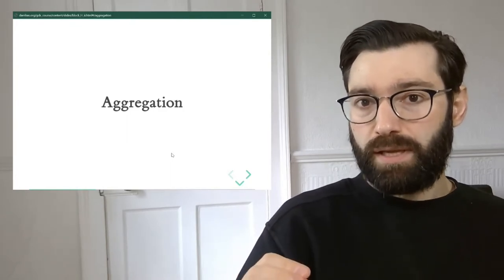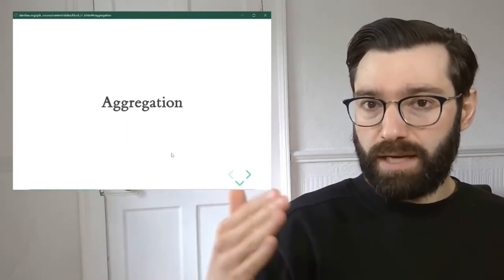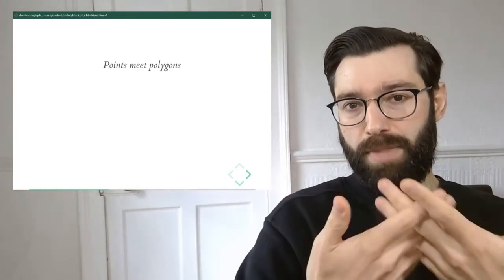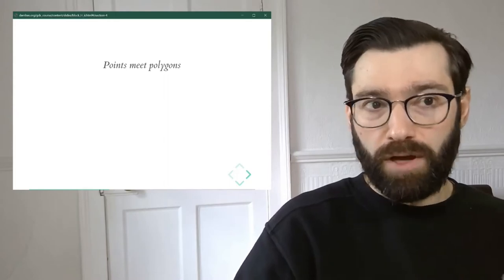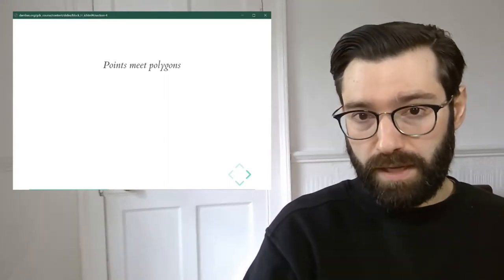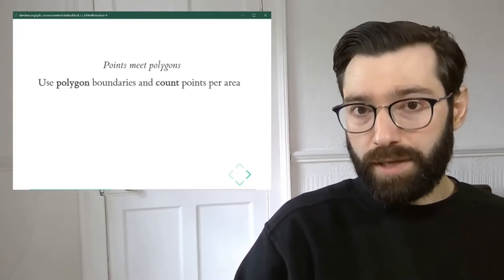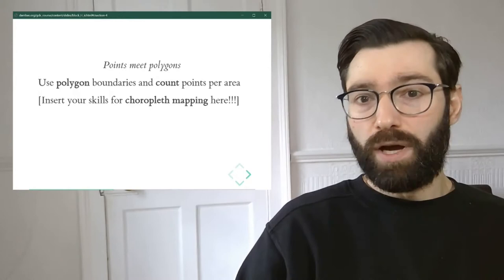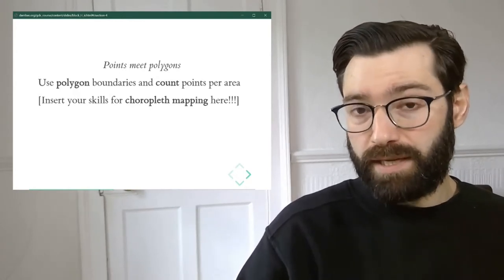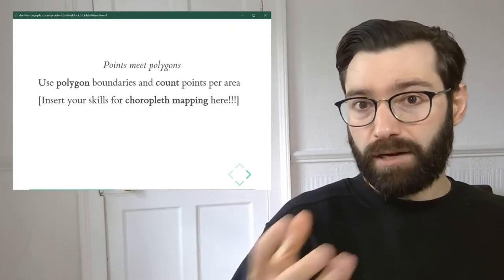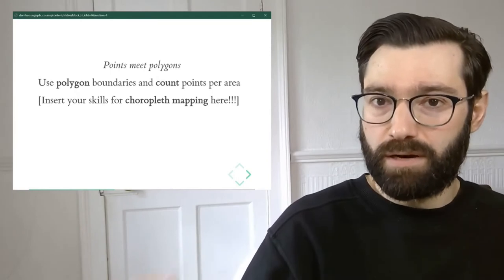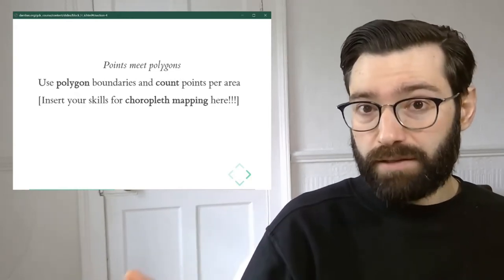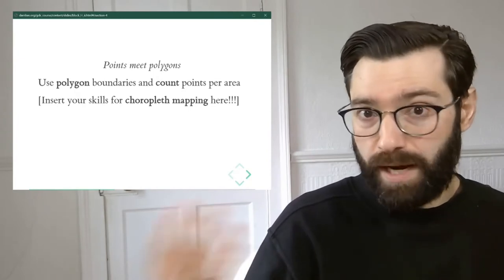The second route, which is an alternative when we start hitting the limits of the one-to-one approach, is aggregation. The key idea here is this merging of points with everything we've learned about polygons. The intuition behind this approach is to use a polygon boundary to count how many points there are in every polygon. Once we've created a count dataset at the polygon level — once we've aggregated our point dataset into polygons by counting how many points there are in a given polygon — everything we've learned about choropleths can be applied here. Because in fact, what we have is no longer a point dataset; it's a polygon dataset with a count variable.